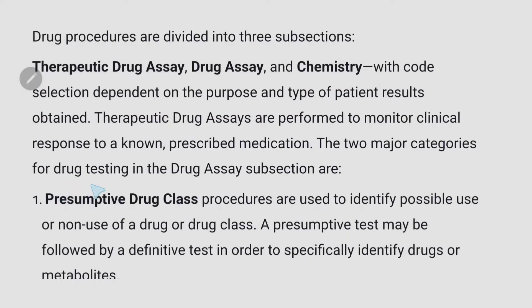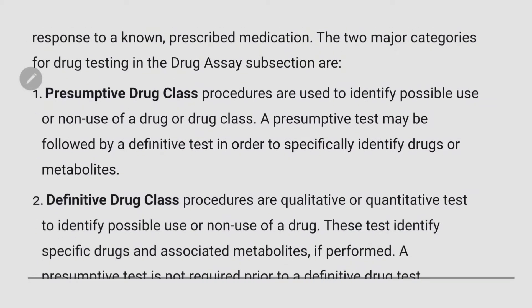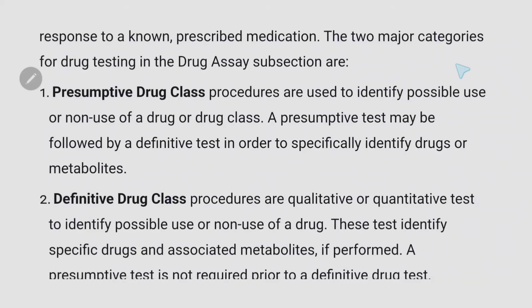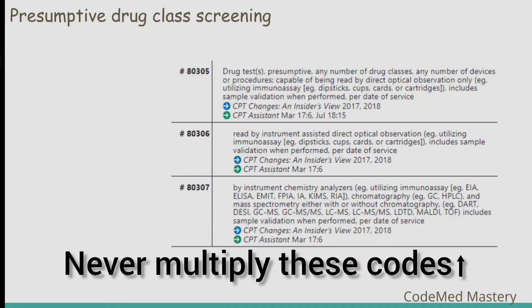The two major categories of drug testing in the drug assay subsection are presumptive drug class and definitive drug class. Starting with presumptive drug class screening, there are three important codes: 80305, 80306, and 80307. An important guideline is we should never multiply these drug class screening codes.